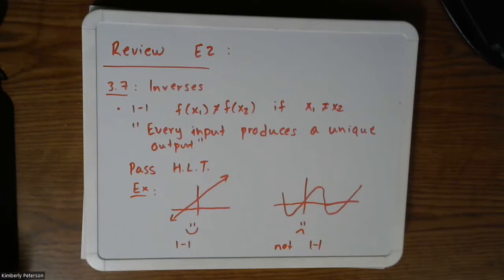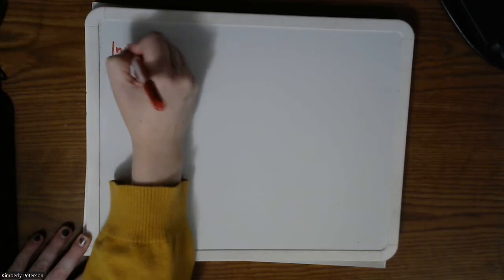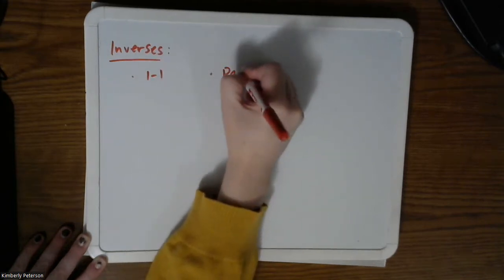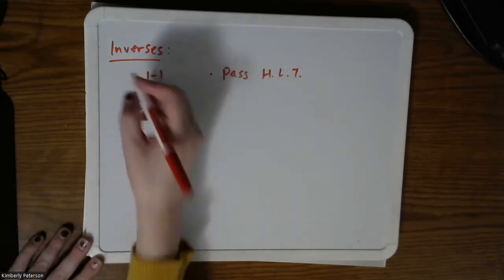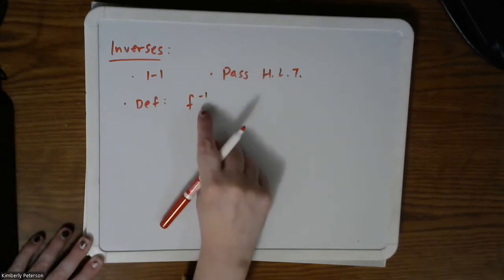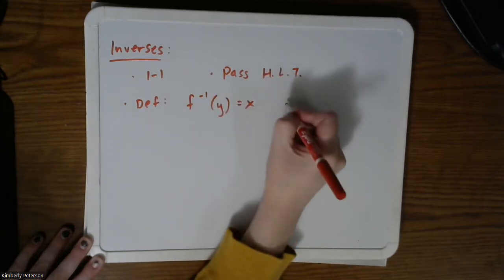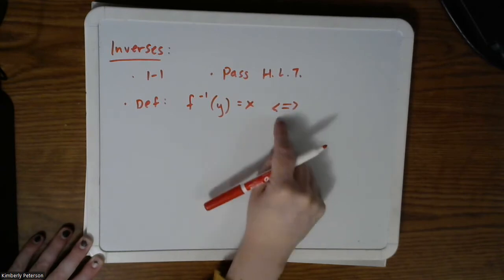Now you might ask why that's important. Well, in order to define an inverse, it must be one-to-one. So by definition, an inverse is one-to-one passes the horizontal line test. And then to take it a step further, the definition is the following. Remember our notation. So we use the superscript negative one of y equals x. And then I said if and only if. So the easiest way to write that is with this equals and then a double arrow. So that means this is true if f of y equals x.